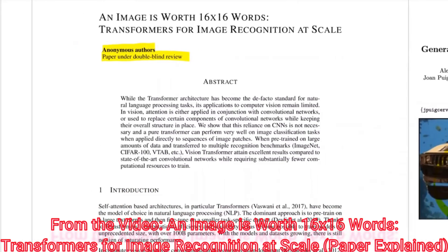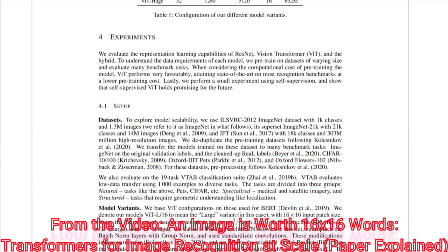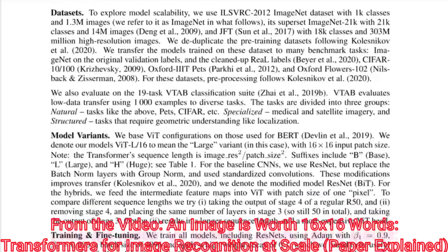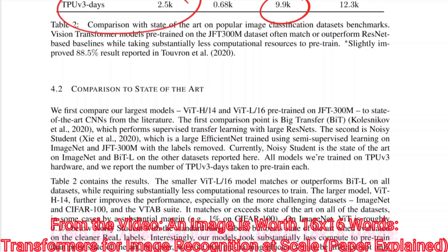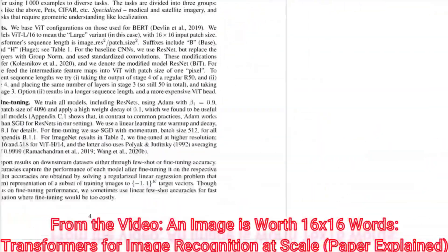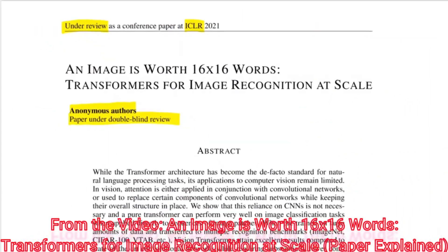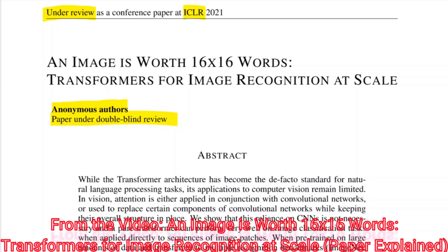What do you want to do — standardize the plotting styles, standardize everything, standardize the citations? When they compare against things, they say their first point of comparison is Big Transfer, by these authors that we have no relation to, maybe or maybe not. It's ridiculous, you can't shield this fake anonymity. This is actually counterproductive, and it only helps the big labs, this anonymity criterion.